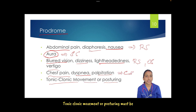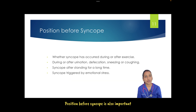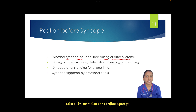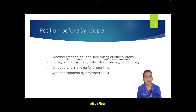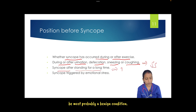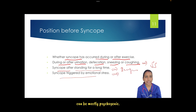Tonic-clonic movements or posturing must be asked about to differentiate from seizure. Position before syncope is important for diagnosis. Whether syncope occurred during or after exercise matters: during exercise raises suspicion for cardiac syncope, whereas after exercise can be benign. Syncope during or after urination, defecation, sneezing, or coughing indicates situational syncope. Syncope after prolonged standing is usually benign; syncope triggered by emotional stress is mostly psychogenic.